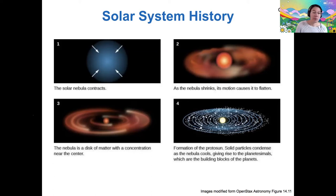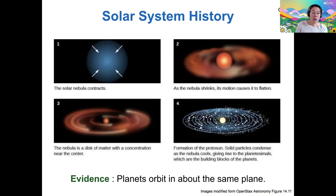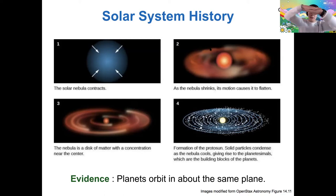The evidence for this formation model includes that planets orbit in the same plane — that's why we believe the solar nebula flattened into a disk. It's also consistent with the physics that we understand from studying other objects.